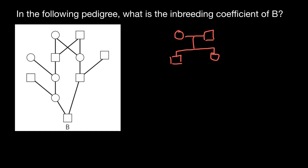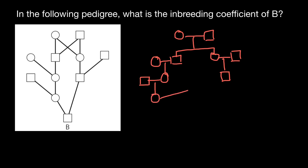Each child is married, and each couple has a child — a female child here and a male child here. This is what we see here: one couple, another couple, a female child, and a male child. This female is also married, and this couple has a daughter, and this daughter is married to this person here, and this couple has a son — B.